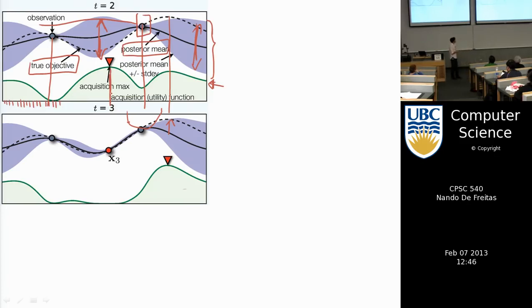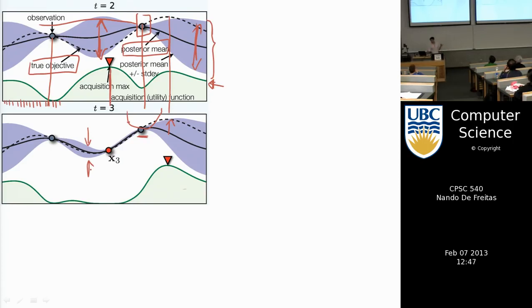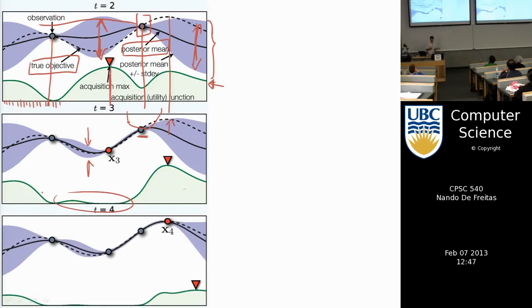When I build this function again, it tells me where to sample next — again a question of variance and mean. Since the highest point is still on the right, I'd still prefer to be there. Moreover, since the uncertainty at x3 was completely squashed when I observed it, that area is no longer interesting, which is reflected by the low value of the acquisition function there.